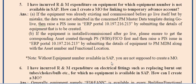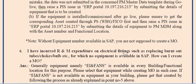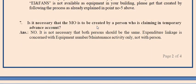Without an equipment number available in SAP, you are not supposed to create a maintenance order. Sixth point: for R&M expenditure on electrical fittings such as replacing burnt-out tubes, chokes, or BTC for which no equipment is available, equipment named EIN fans is available in every building's functional location — select that equipment when creating the maintenance order. If EIN fans is not available in your building, get it created following the process explained in point five. It is not necessary that the MO be created by the same person claiming in the temporary advance; expenditure linkage is concerned with the equipment number and maintenance activity only, not the person.